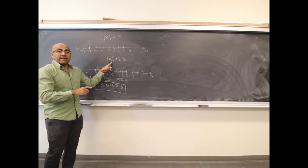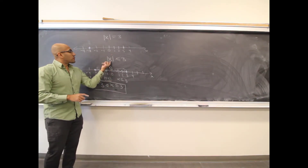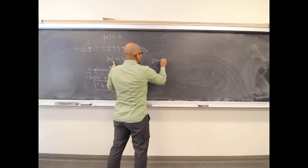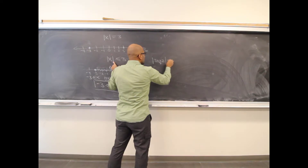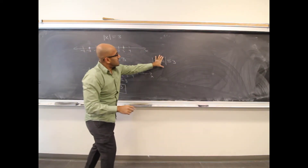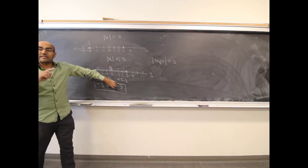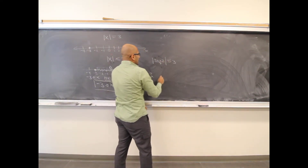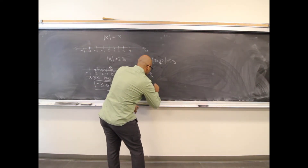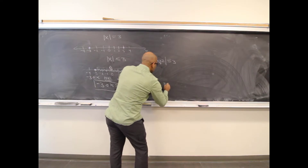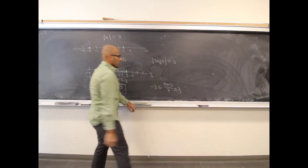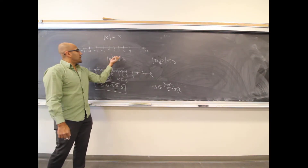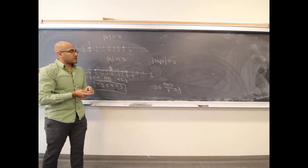For a more complex case like the absolute value of 3x plus 2 over 7 is less than or equal to 3, whatever is inside goes in the center. The solution becomes: negative 3 is less than or equal to 3x plus 2 over 7, which is less than or equal to 3. Then we solve from there.